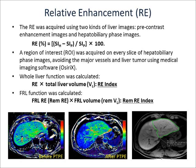The RE image was acquired using two kinds of liver images: pre-contrast enhancement images and hepatobiliary phase images. The whole liver function was calculated as RE multiplied by total liver volume. This value was called the RE index.